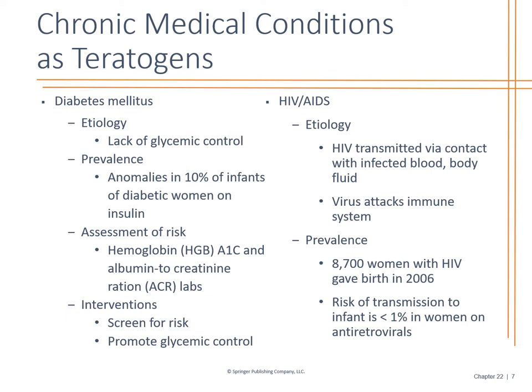HIV and AIDS can be transmitted via contact with infected blood and body fluids. The risk of transmission to the infant is less than one percent on antiretroviral therapy. That shows you that with education and knowledge, you can still have a healthy pregnancy and not pass HIV/AIDS on to your child. If you have that patient, you need to have that dialogue with them if they want to talk about family planning, because that is a huge concern.